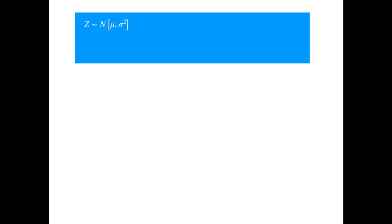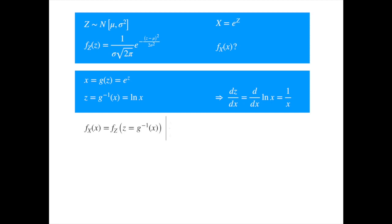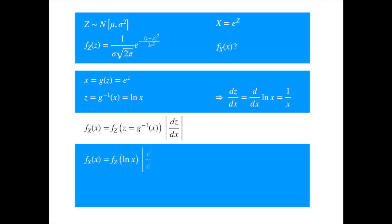We now move on to the probability density. We have a normally distributed variable z with mean mu and variance sigma squared. The task is to find the probability density of the exponential of z. Let g denote the function that transforms z into x, so the inverse of g transforms x into z. In this case, g is the exponential function while the inverse of g is the log function. The derivative of z with respect to x can be easily calculated. Recalling the random variable transformation formula from statistics and substituting the inverse function and the density of z evaluated at log of x, we get the log-normal density. As the exponential is positive, we can get rid of the absolute value.